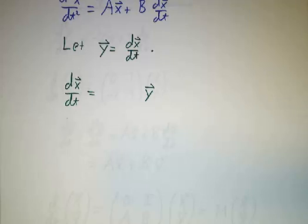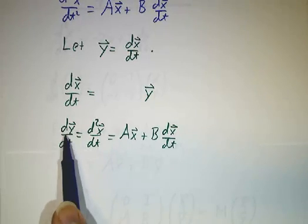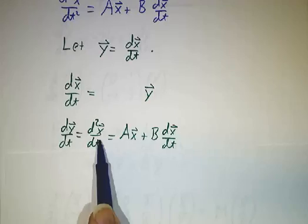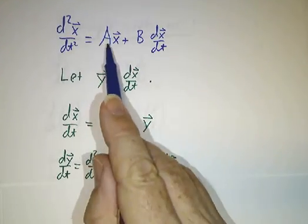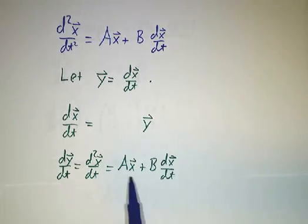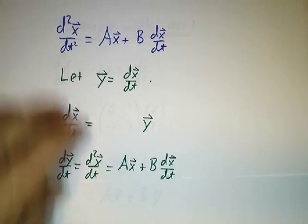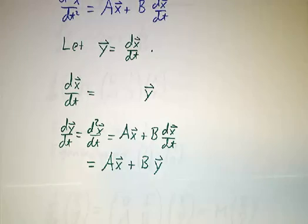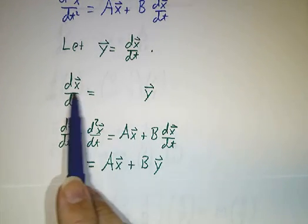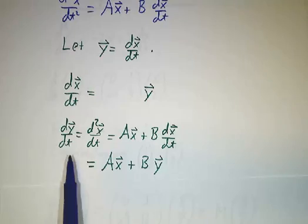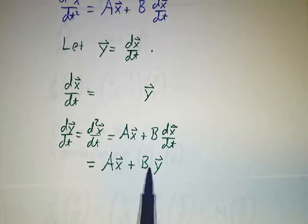And what's the derivative of y? Well, the derivative of y is the second derivative of x. And our equation tells us what the second derivative of x is. It's Ax plus B times the derivative of x. But that's Ax plus By. So the derivative of x is y. The derivative of y is Ax plus By.